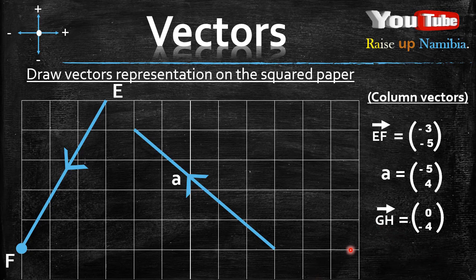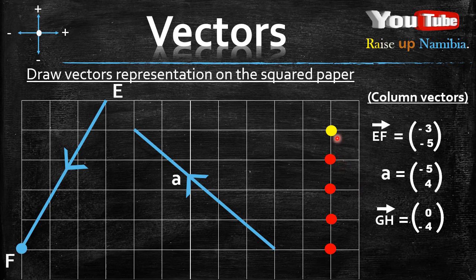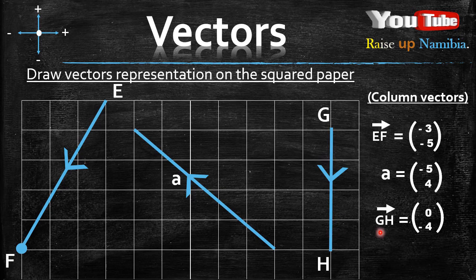How about GH? Choose a starting point again, then check for the x-axis — you are given a zero, which means you won't move on the x-axis at all. For the y-axis you are given a negative 4, meaning you need to go four lines downwards, because it's negative: one, two, three, four. From there we draw a line from our starting point to our end point and label our vector. Just like that we are done with GH as well.